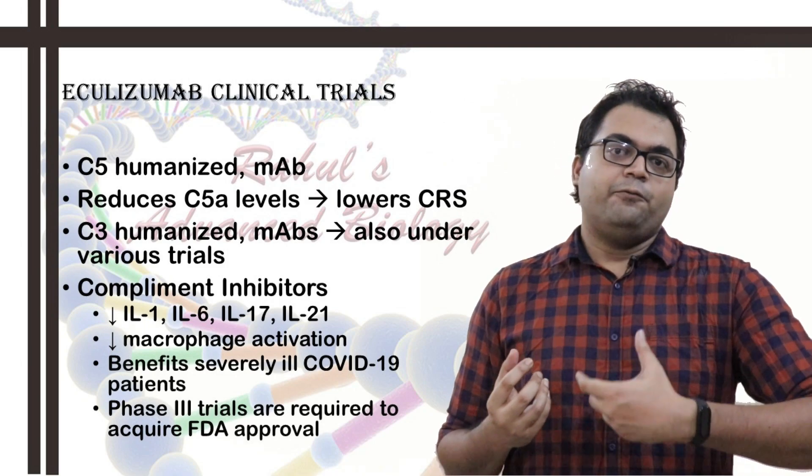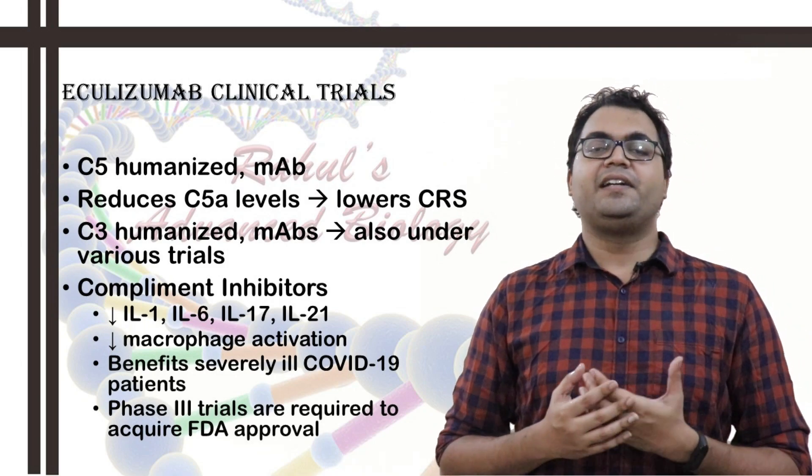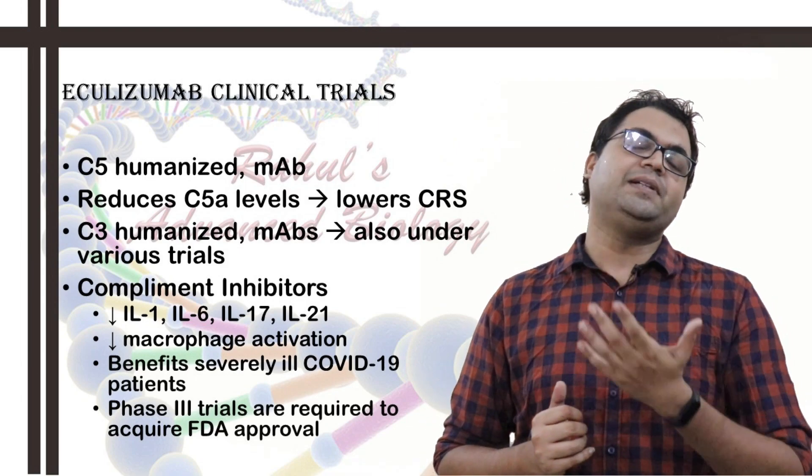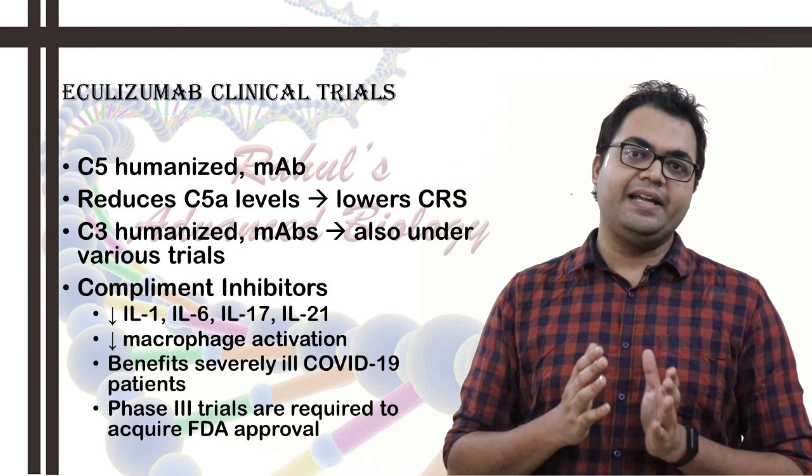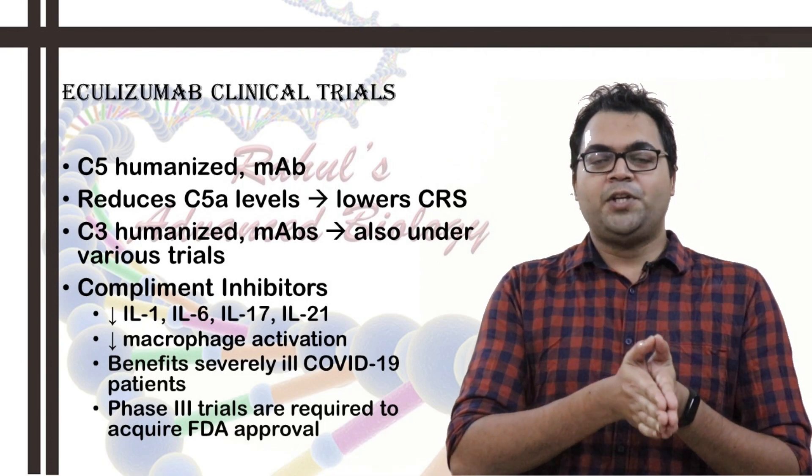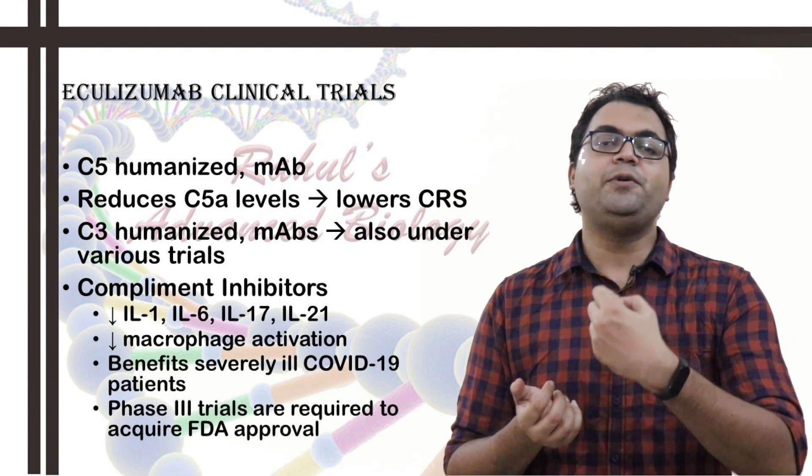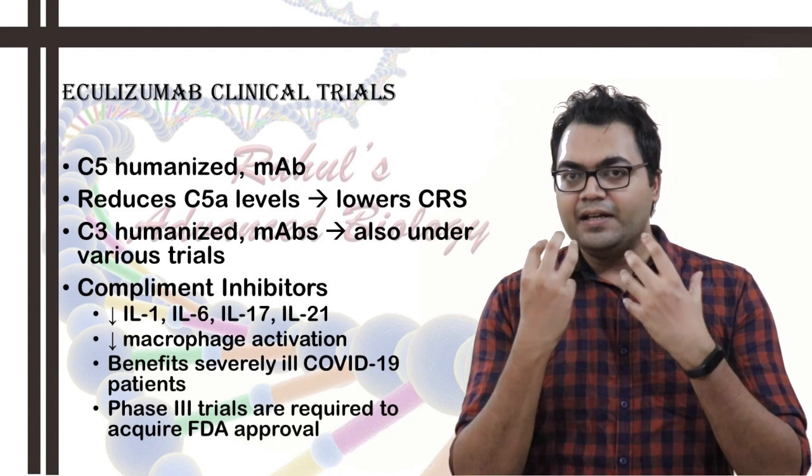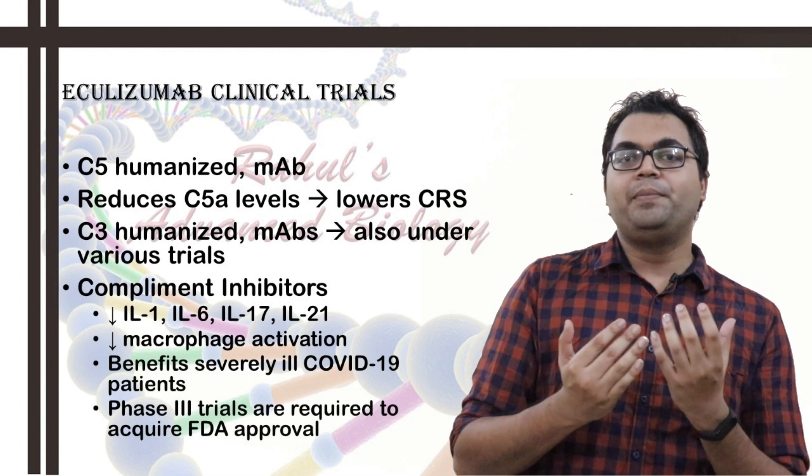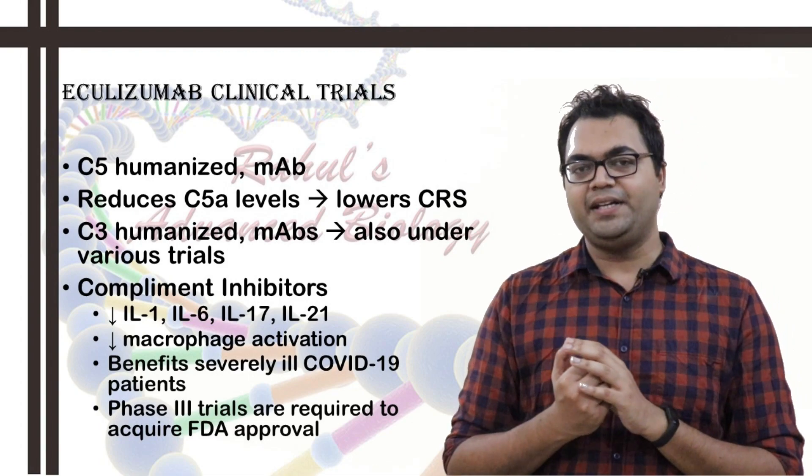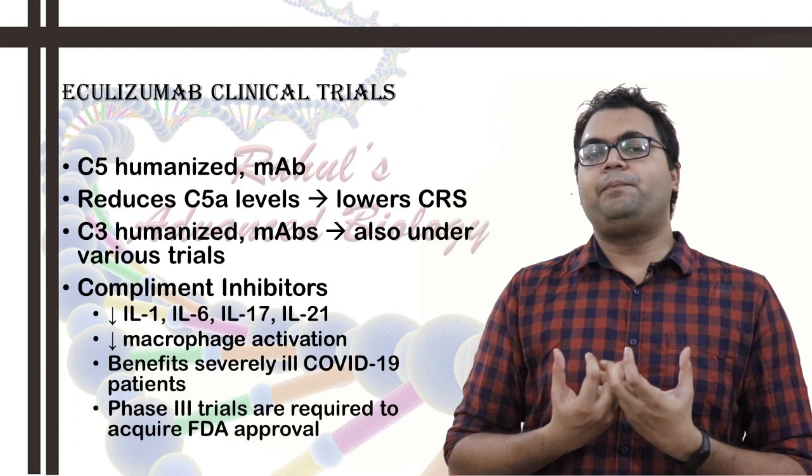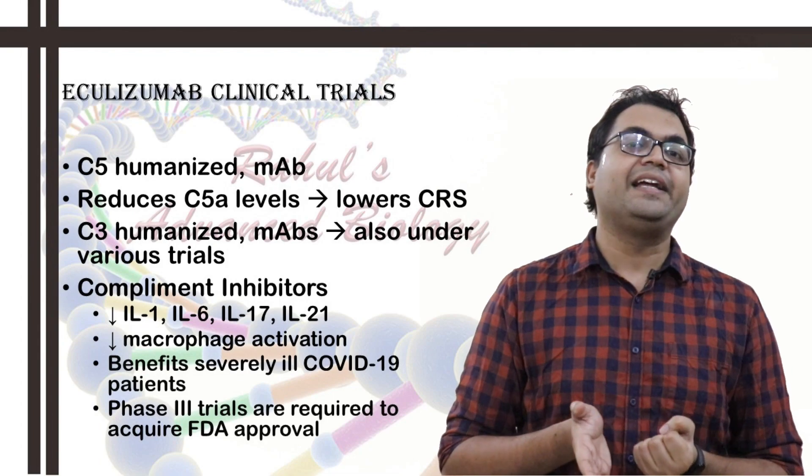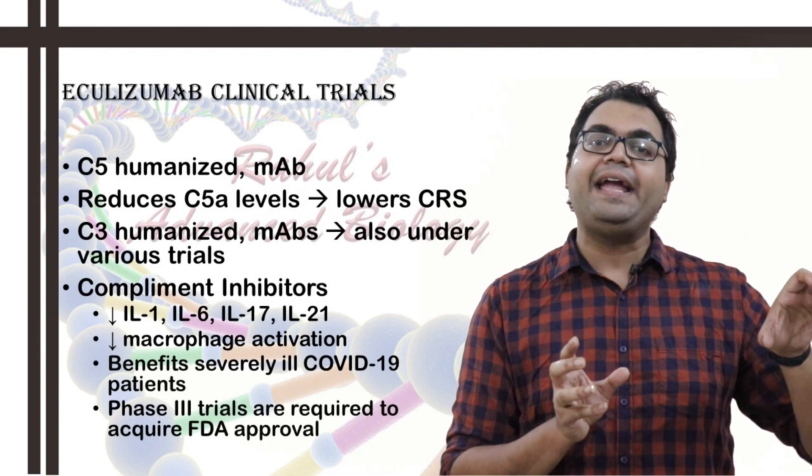Same way, there are various complement C3 blockers which are under various phases of the clinical trials. Now, if these are administered in various clinical trials, it has been seen that eculizumab, being a C5 antagonist humanized monoclonal antibody, has been able to attenuate ARDS. Because, once it will bind to C5, the C5 won't be present to be cleaved by C4b2a3b. Now, once it is not present, what would happen is, the anaphylatoxin C5a production would be ceased to an extent.